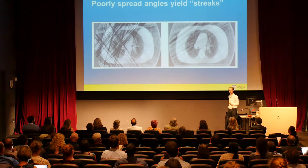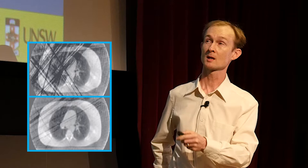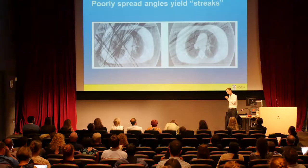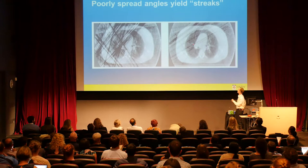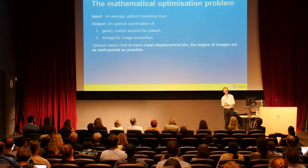The difference between well-spread and poorly-spread angles can be significant. With poorly spread angles you get streak effects — criss-crossing dark lines due to non-uniform imaging angles. With nicely spread angles you get a much cleaner picture. So our optimization problem takes as input an average patient breathing cycle: we get a patient to lie down, breathe normally for a long time, and assemble all those breaths into an average breath that's four to five minutes long, which we use to schedule what is going to happen.